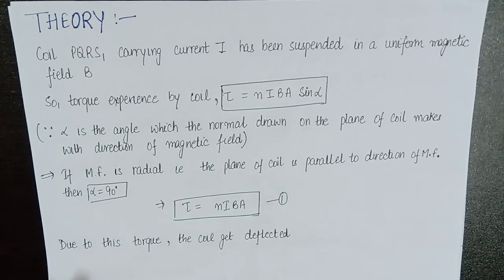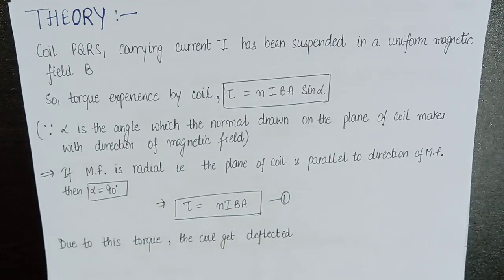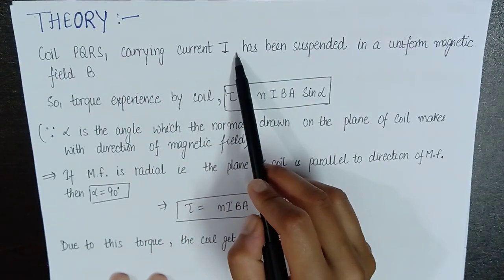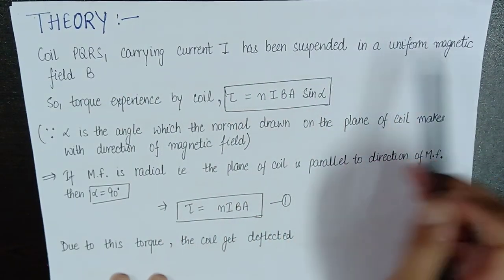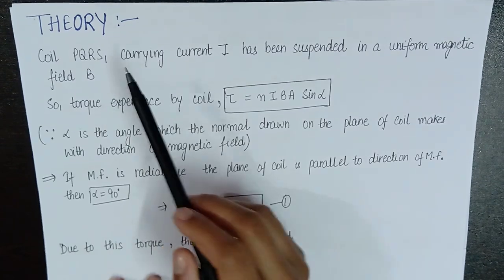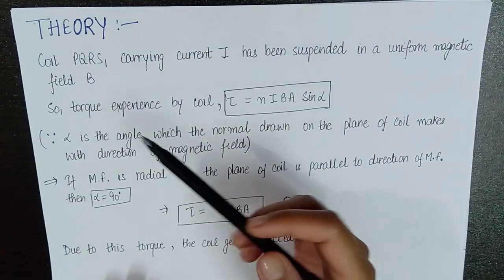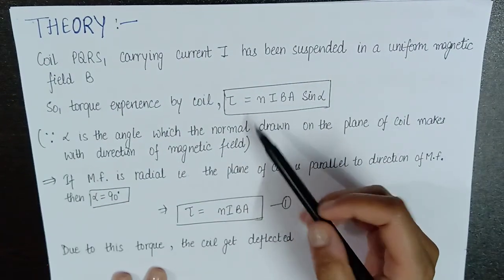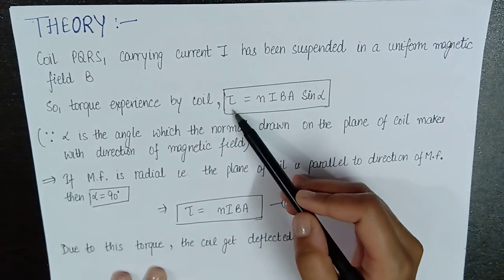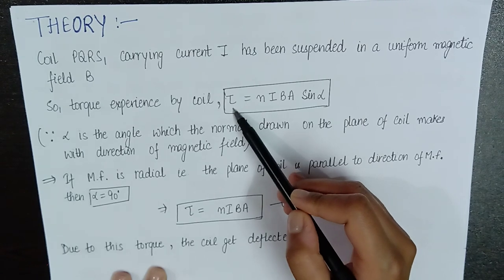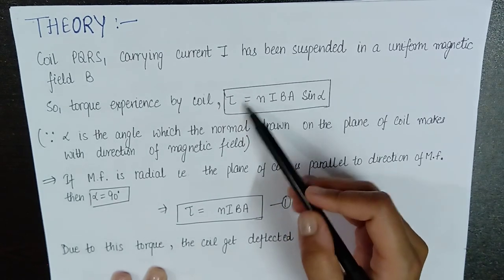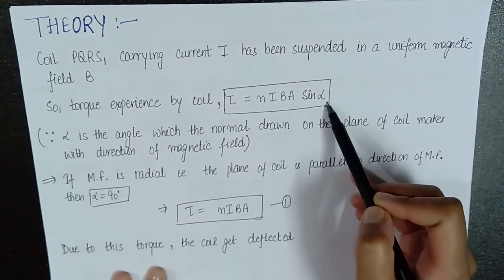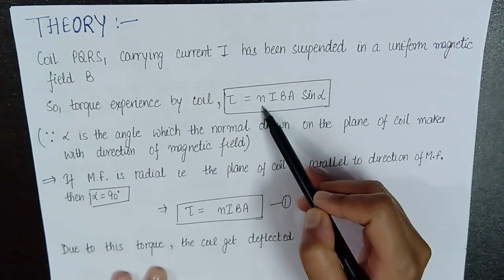The next theory comes. As we know that the PQRS coil is carrying current I, and it is suspended in a uniform magnetic field B. And we have already studied that when we keep the current carrying coil in any magnetic field, it will experience a torque. And the value of torque is given by tau, which is equal to NIBA sin alpha, where N is the number of turns that are present in the coil.